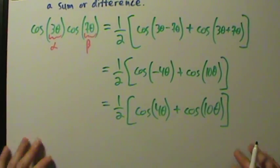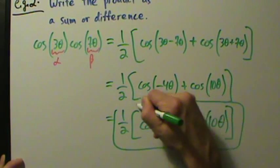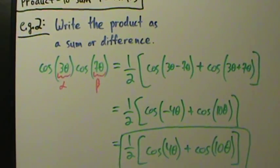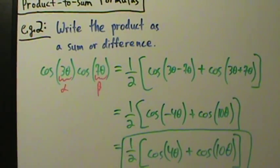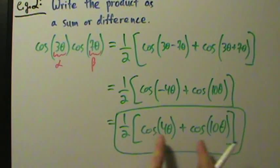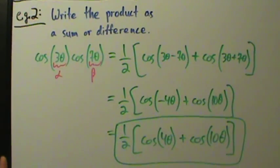That's pretty much it. That's it for example 2. Here's our answer: 1/2 times the quantity cosine of 4θ plus cosine of 10θ. And that's this product, cos(3θ)cos(7θ), rewritten as a sum of two different trig functions. That's example 2 of using product-to-sum formulas to rewrite a product as a sum.